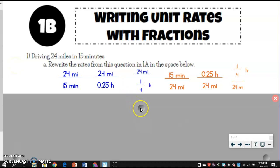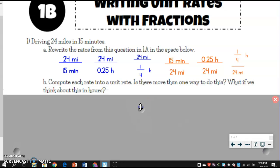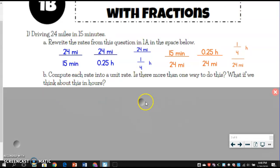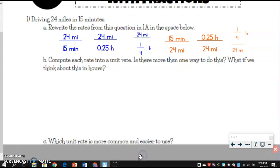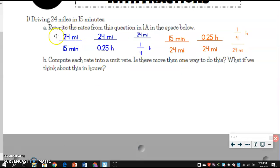I hope you paused the video because I'm going to move on to the next part. So now we're going to talk about how to compute each rate into the unit rate. We talked about it just a little bit in 1a, but we're going to take it one step further. We want to talk about is there more than one way to do this? Again, what if we think about this in terms of hours instead of minutes? So let's just talk about one at a time. So I'm going to focus on this first one, the 24 miles and 15 minutes. So I'm going to set that up right here. Go ahead and make sure your notes look just like mine.